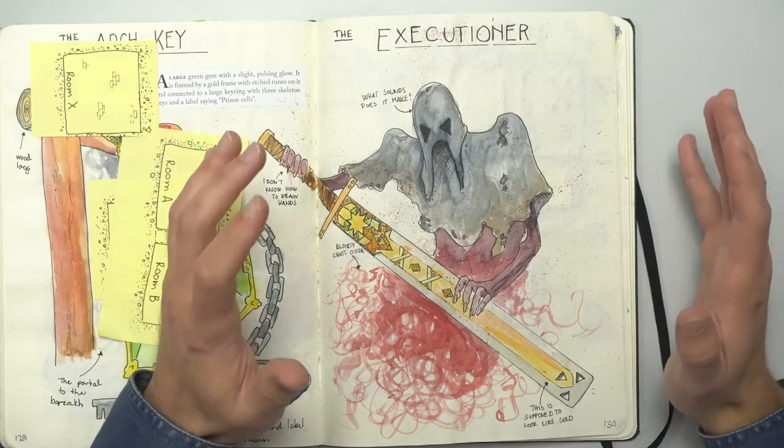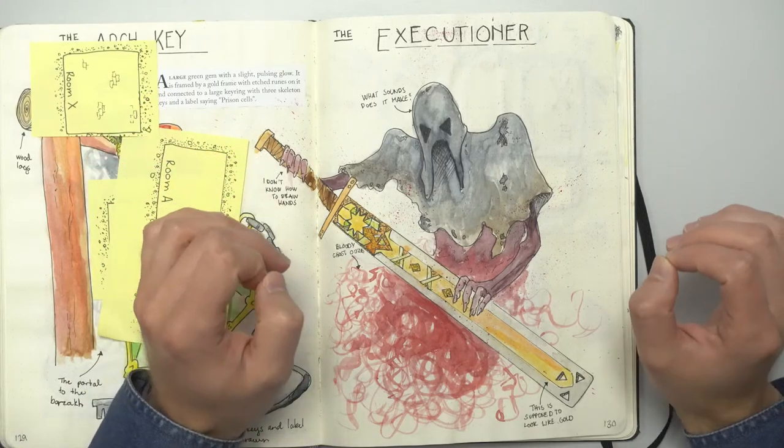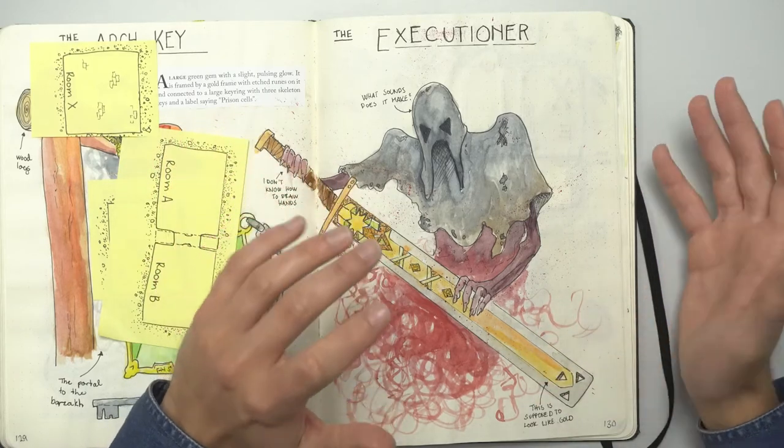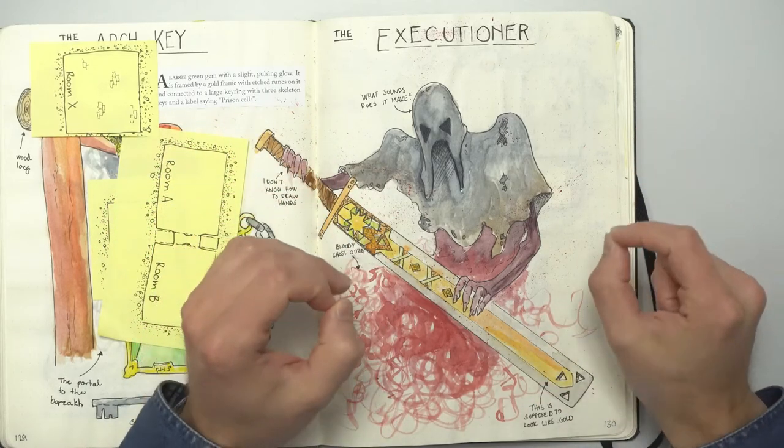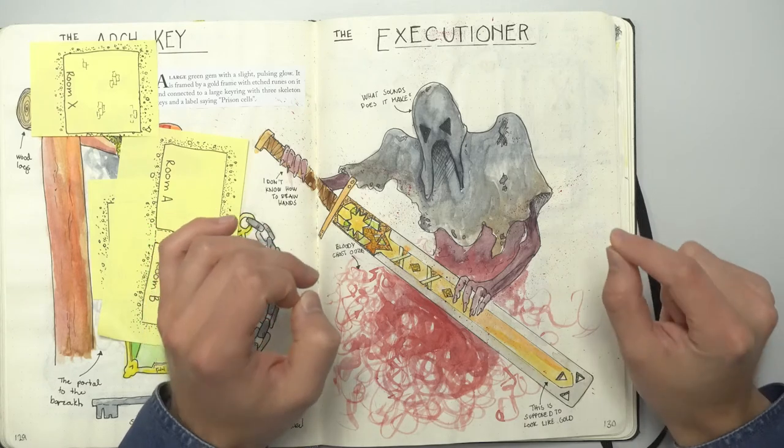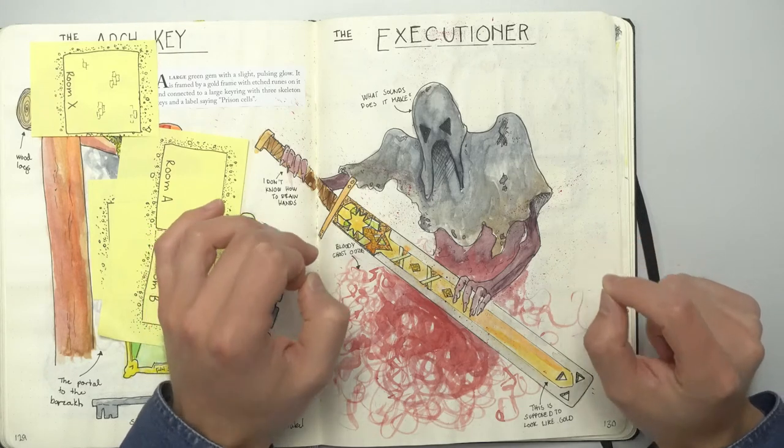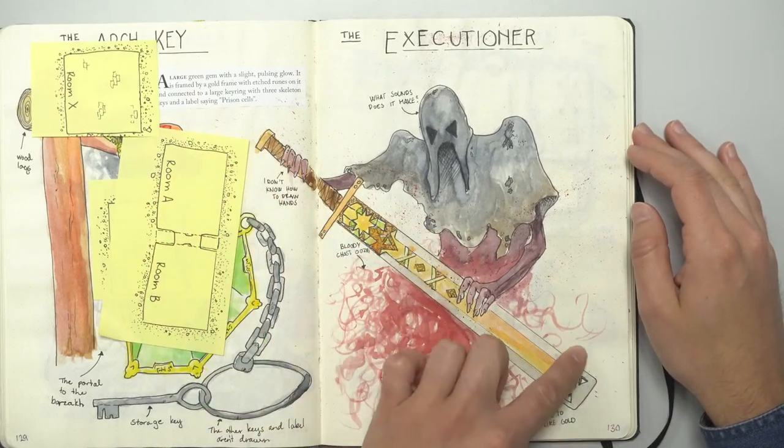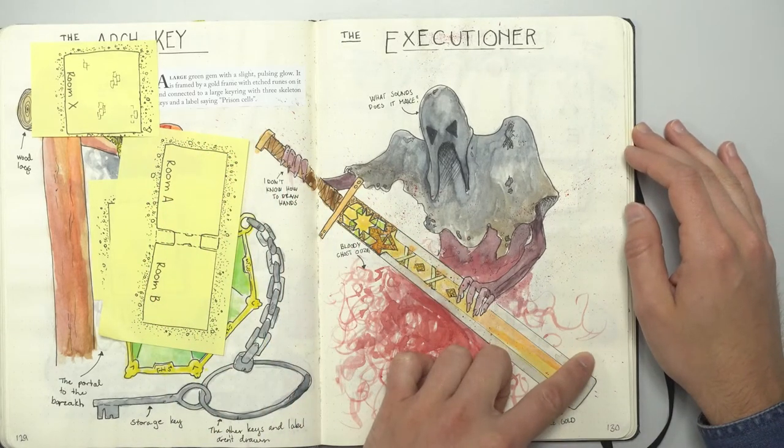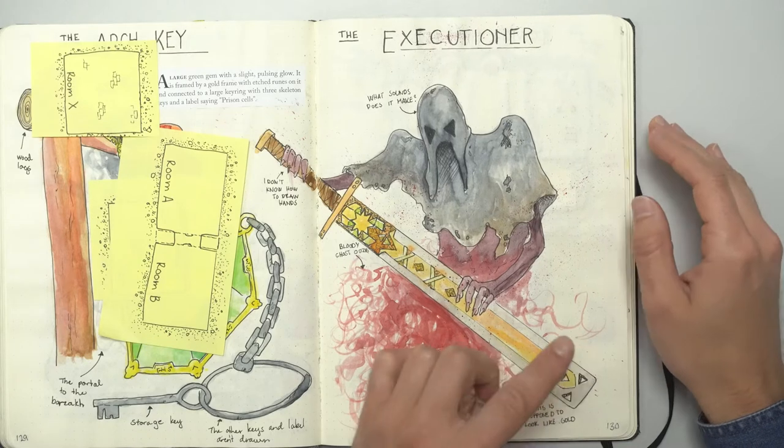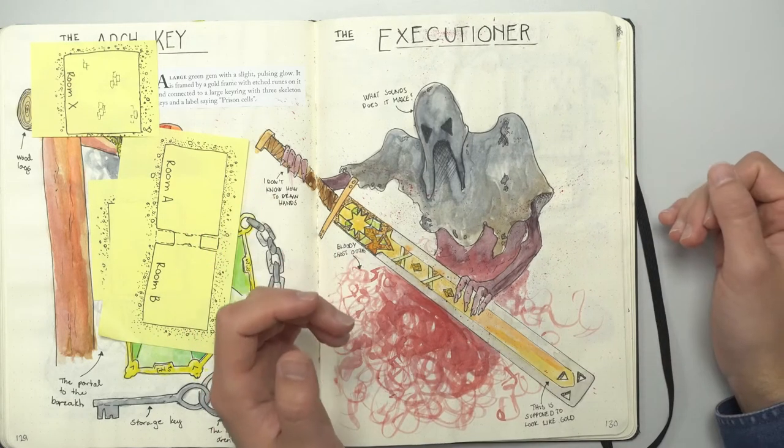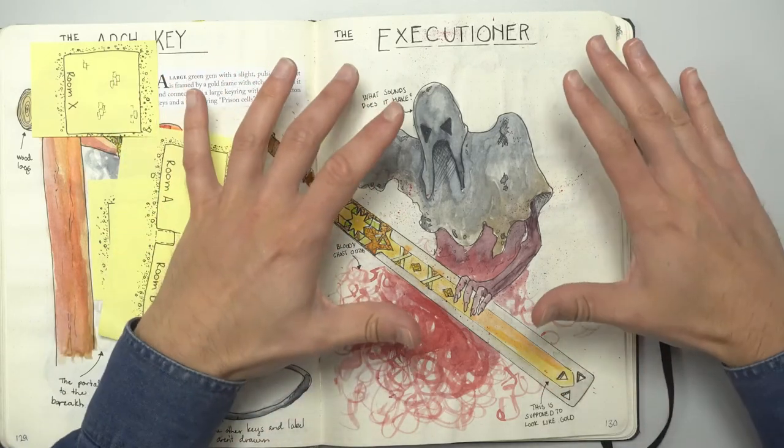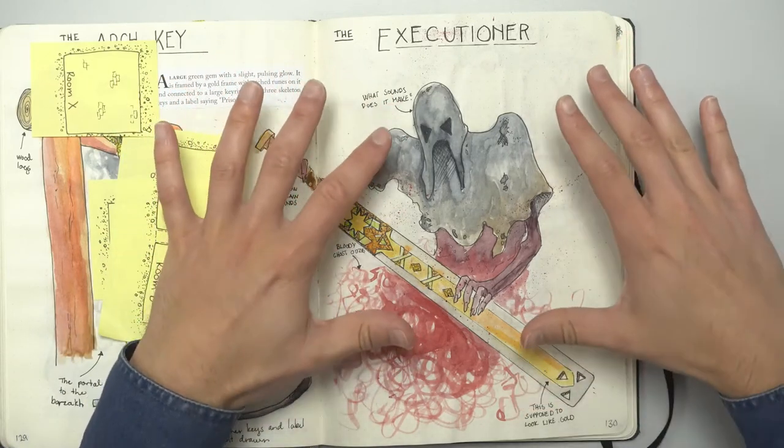For the executioner, as I've said previously, the executioner is impossible to kill. Well, he or she is a relentless killing machine that aims for the head of anyone coming within reach. And they wield the massive executioner sword that is a powerful magic weapon. Which I have to admit, I don't know what it does yet.